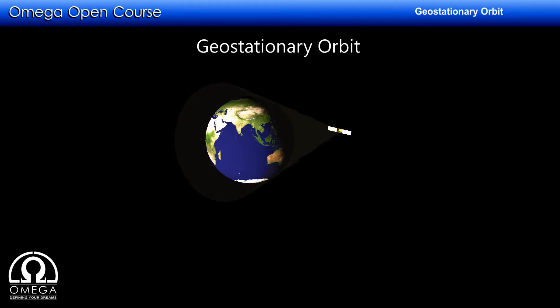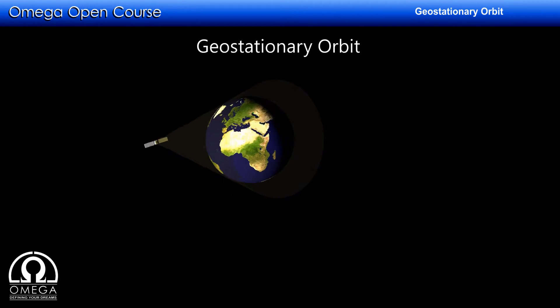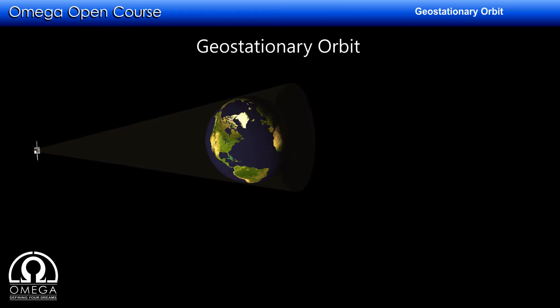Such orbit is very crucial in communication systems. All the communication satellites orbiting around the Earth are in geostationary orbit.